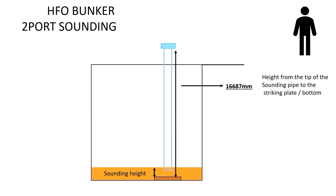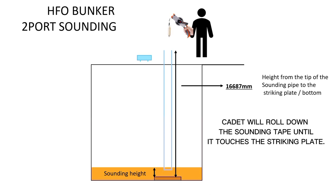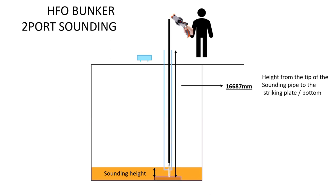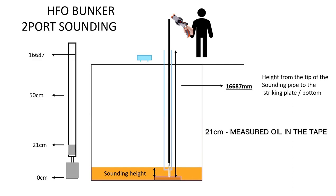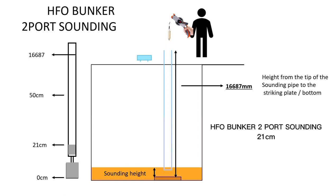Cadet is also tasked to sound the HFO Bunker tanks to port. 11,687 cm is the height from the tip of the sounding pipe to the striking plate. Cadet will roll down the sounding tape until it touches the striking plate. 21 cm measured oil in the tape. HFO Bunker to port sounding: 21 cm.